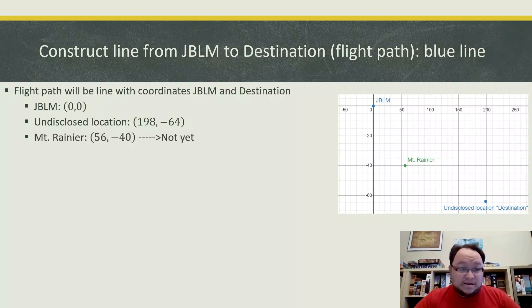Mount Rainier, this other coordinate, we're not going to use yet. So that flight path is going to be a line. So we are going to use our slope intercept form, y equals mx plus b. And we are going to plug in the coordinates for JBLM and the undisclosed location or destination there. It doesn't matter which order you choose. As long as it's vertically stacked, you should be good to go.